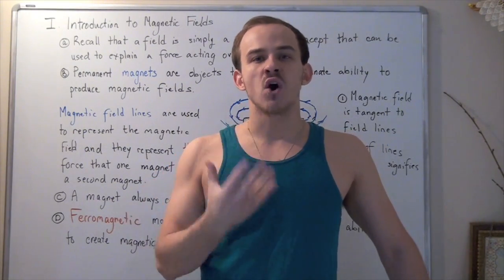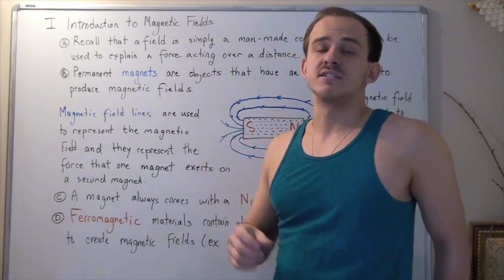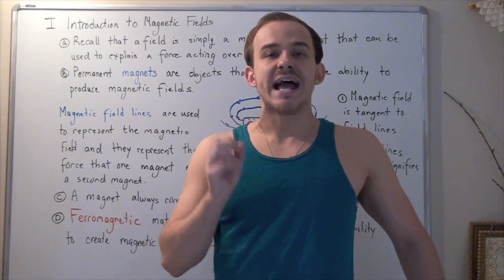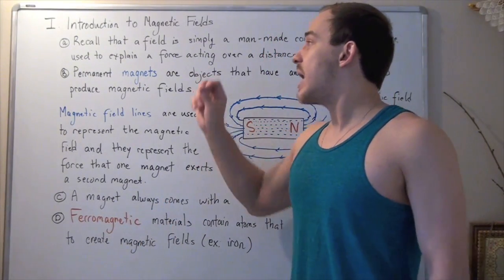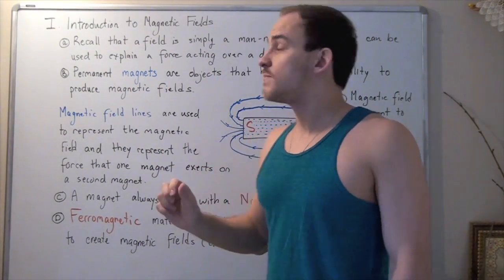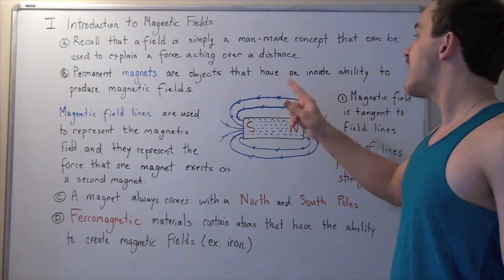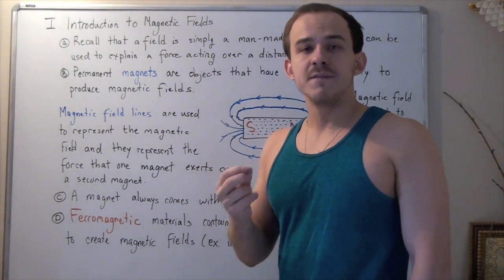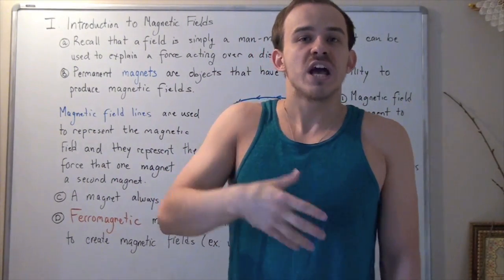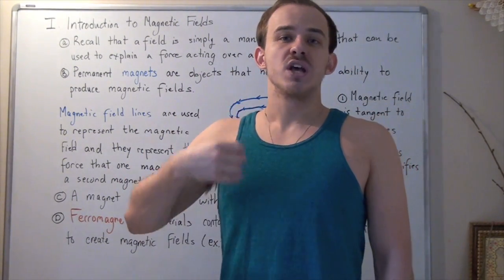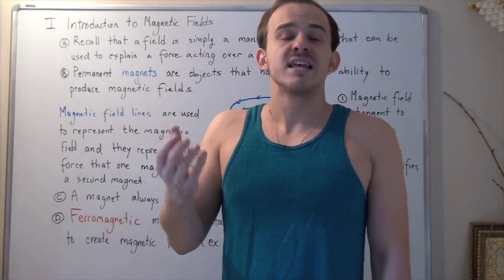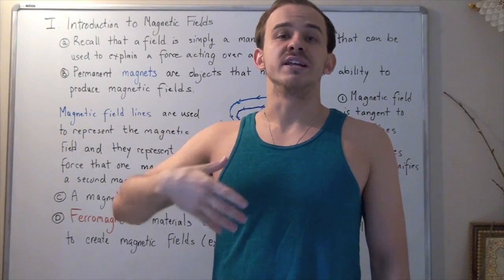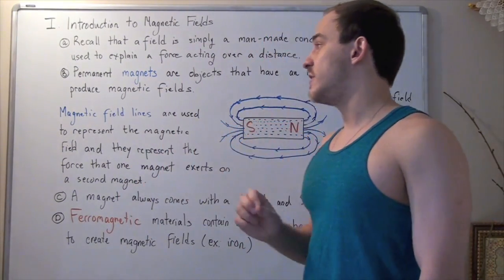In the same way, we can talk about magnetic fields, except now we're not talking about mass and we're not talking about charge — we're talking about things called magnets. Magnets, or permanent magnets, are objects that have an innate ability to produce magnetic fields, just as positive and negative charges have an innate ability to produce electric fields, and any mass has an innate ability to produce gravitational fields.